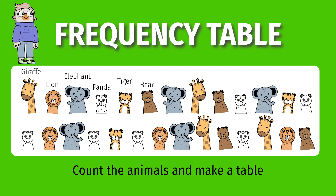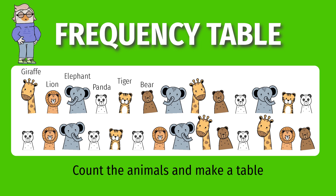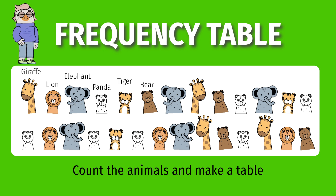Frequency Table. Frequency is how many times something occurs. You just have to count the animals and enter their numbers in a table.